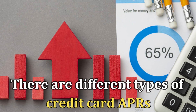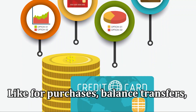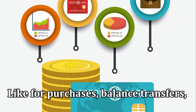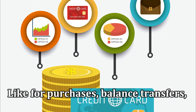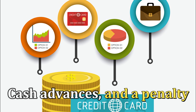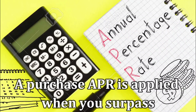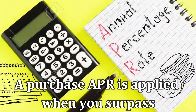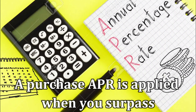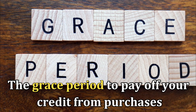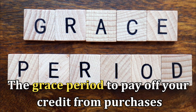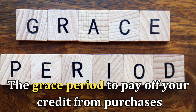There are different types of credit card APRs, like for purchases, balance transfers, cash advances, and a penalty. A purchase APR is applied when you surpass the grace period to pay off your credit from purchases.